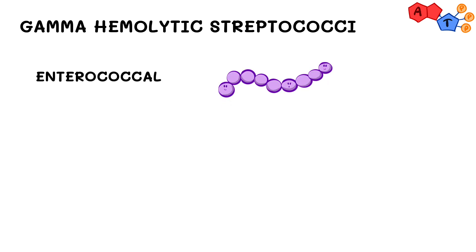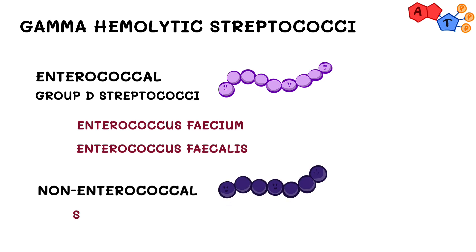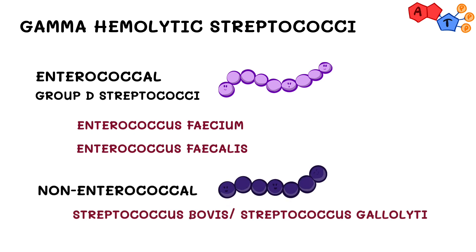Today's discussion focuses on gamma hemolytic strep. We can divide them into two groups: enterococcal, also known as group D strep, and nonenterococcal, which includes strep bovis, also known as streptococcus gallolyticus. This video focuses on three organisms: enterococcus faecalis, enterococcus faecium, and streptococcus bovis.